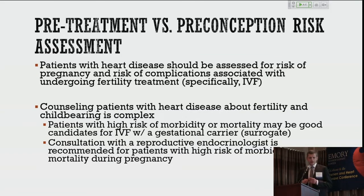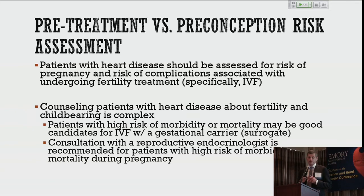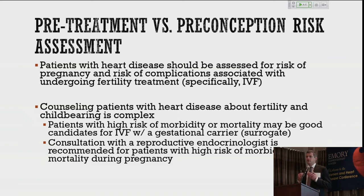Patients with heart disease should be assessed for two different types of risk: preconception risk and pretreatment risk if they're planning on fertility treatment. Counseling patients who have heart disease about fertility and childbearing is very complex. Patients with a high risk of morbidity and mortality may be good candidates for IVF with a gestational carrier. Consultation with a reproductive endocrinologist is recommended for any patient who has a high risk, because although pregnancy may be contraindicated, that doesn't mean she cannot have a family or have a child who is her genetic offspring.